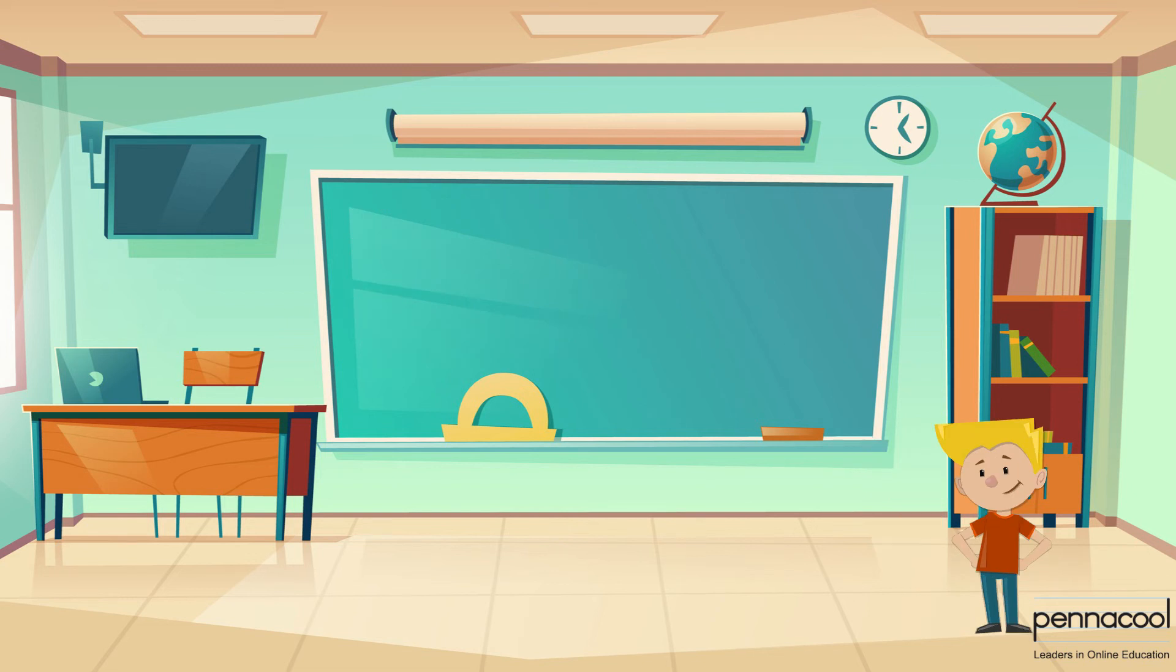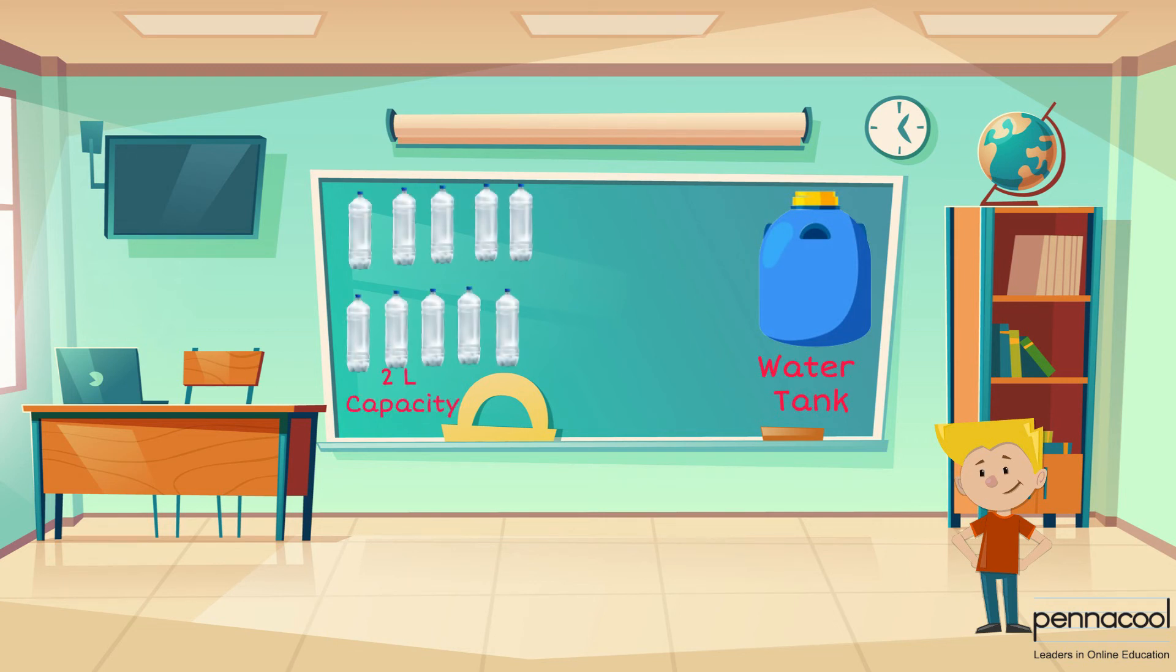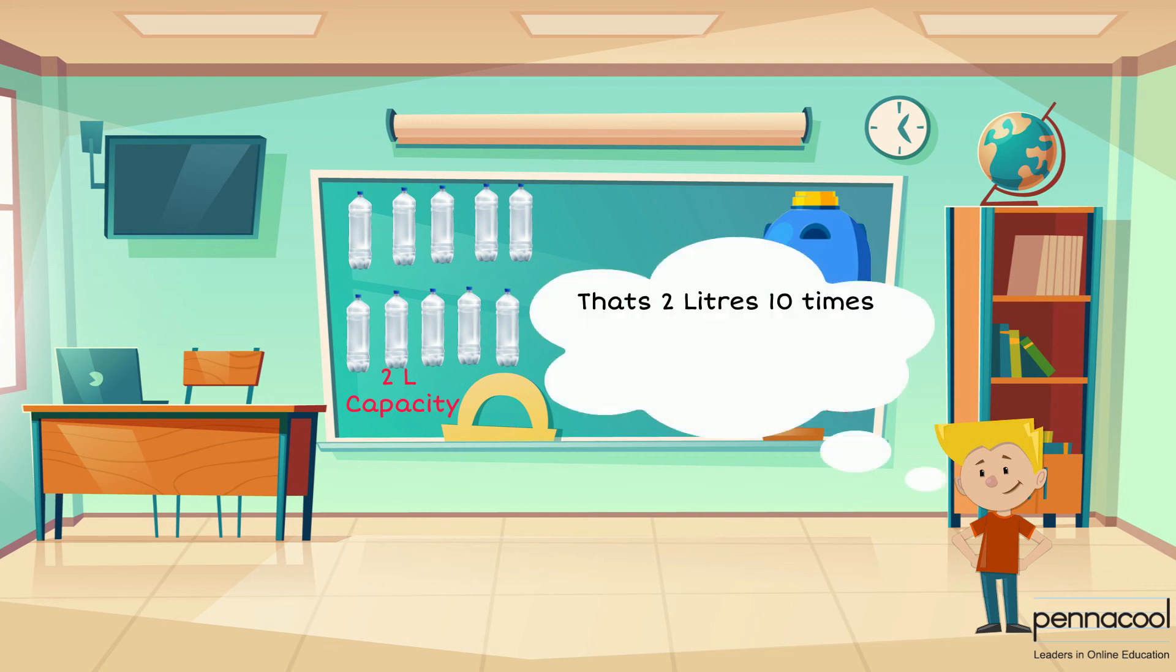Adrian is asked to determine the capacity of a small water tank. He uses 2 litre bottles of water to fill it up. He uses 10 full bottles of water to completely fill the tank. How can Adrian determine the capacity of the tank? The tank is filled with 2 litres 10 times. This suggests that the tank has a capacity of 10 times the 2 litre bottle. This gives the tank a total capacity of 20 litres.